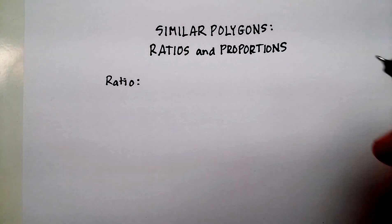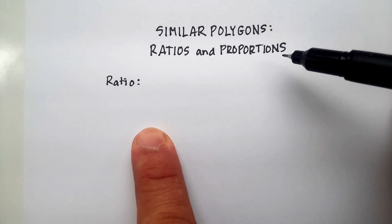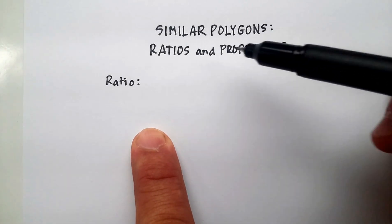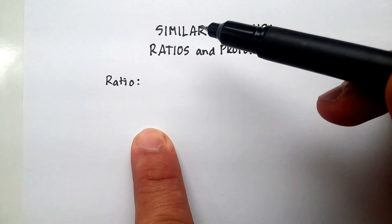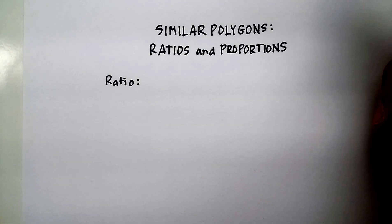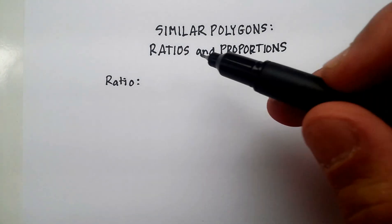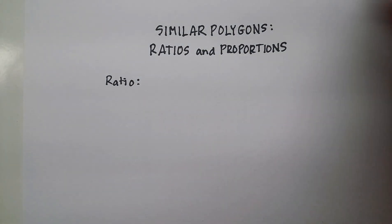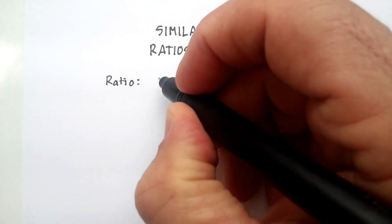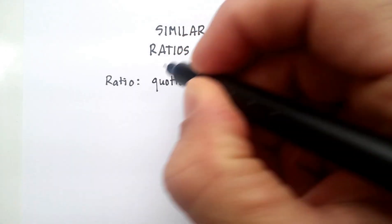In this video, we're going to go over something called ratios and proportions, specifically with similar polygons. Remember that a polygon is just a many-sided figure. A ratio and proportion is basically some kind of quotient. Remember when a quotient just means some kind of division problem.